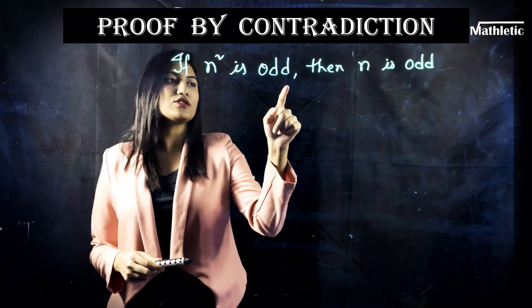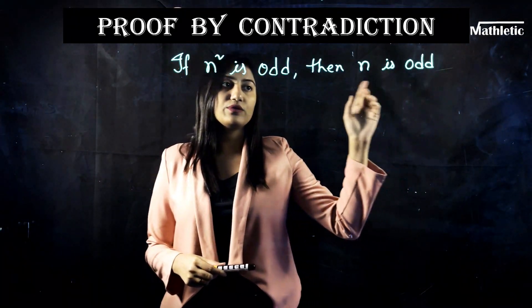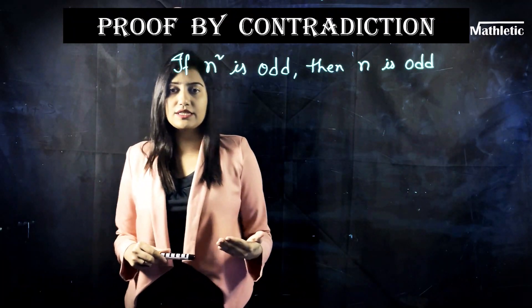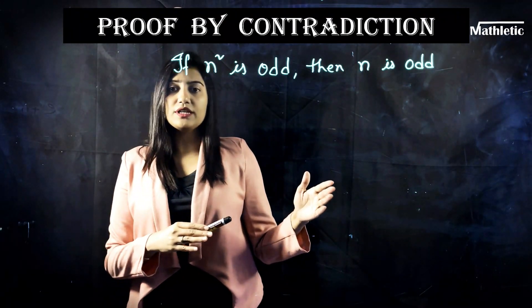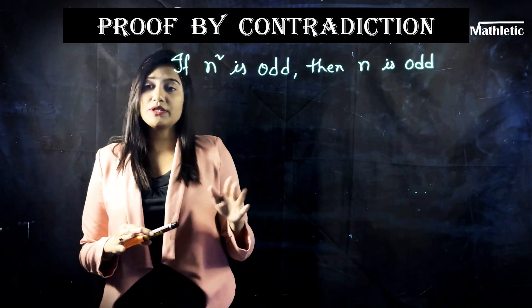So the question says that if n² is odd then n is also odd and we need to prove this statement by contradiction. So instead of starting this one, let me just give you a brief idea about how this method actually works.